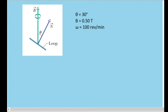Now this loop is being rotated in such a way that its angle theta is constant. You can imagine the normal vector revolving around the magnetic field vector with the angle remaining constant, rotating at a rate of 100 revolutions per minute.